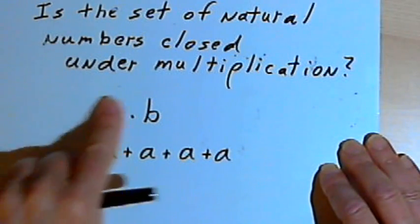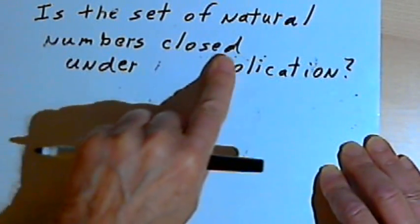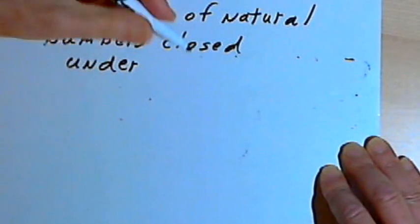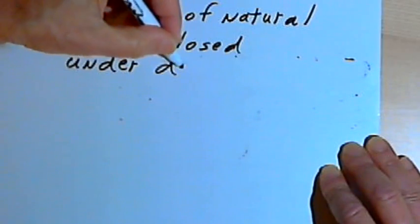And let's do the last of the four basic operations. Let's see whether these natural numbers are closed under division.